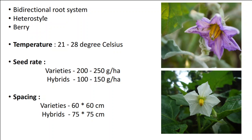The most important characteristic from an exam point of view is that Brinjol is heterostylous in nature. Heterostyly is the condition where the stamens or the pollen of the flower cannot reach the stigma of the same flower because of differences in their lengths. The stigma and style are long, so the pollen and stamen cannot reach the stigma, and hence this condition is called heterostyly.